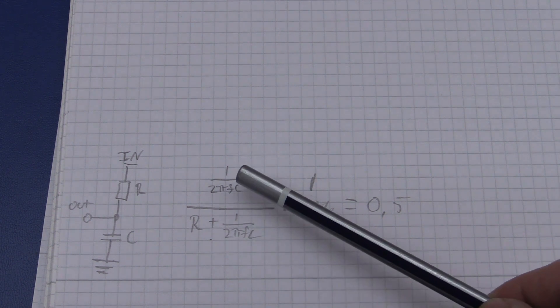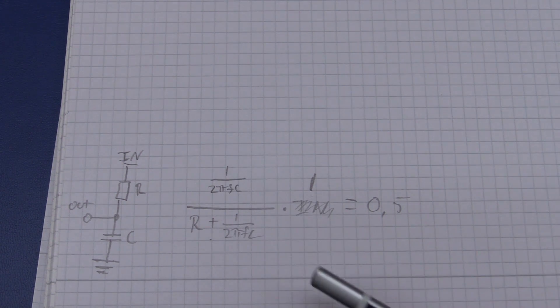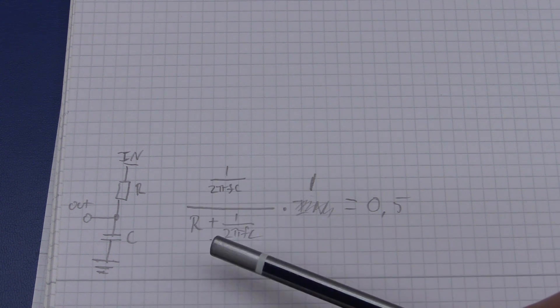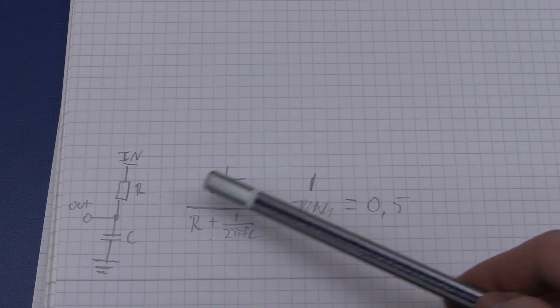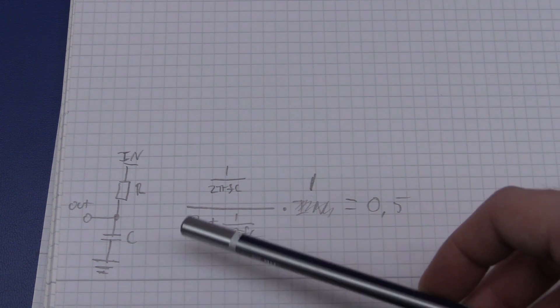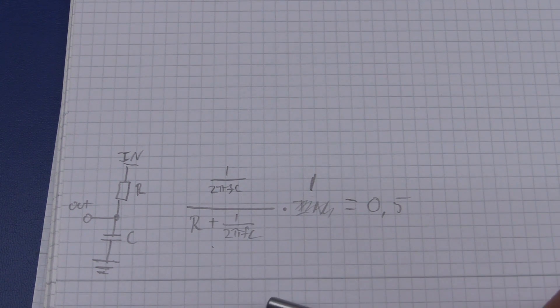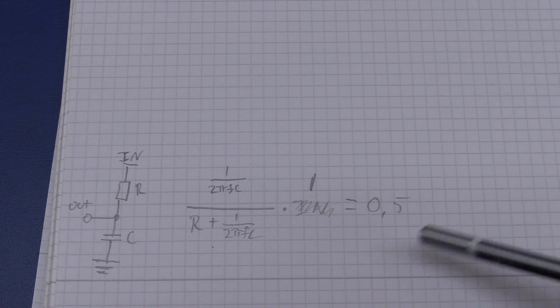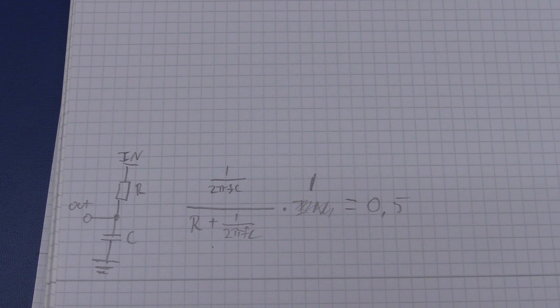The first thing you want to do is select your frequency and put it where the F is, and then you can see you still got infinite possibilities because both R and C are still variables. Say you pick a resistor, 1k for example, then you can easily calculate C, just by either rewriting the equation or putting it into a calculator and solving it for C.